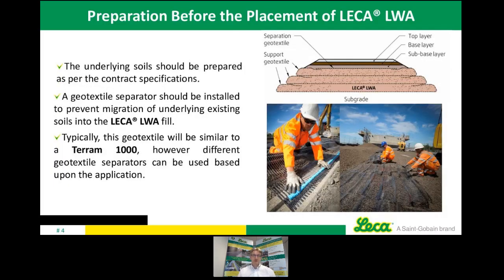For preparation before placing Leca LWA, if the underlying soils are soft and friable — peat, alluvials, etc. — we suggest placing a geotextile such as a Terram 1000 in the work area before placing the Leca. The purpose is to stop migration of fines or friable material into the Leca and therefore increasing its density. You could use a permeable blanket which still allows water to rise, giving you attenuation benefits. Once installed, a Terram 1000 is placed on top of the Leca before any capping or other layers are laid.